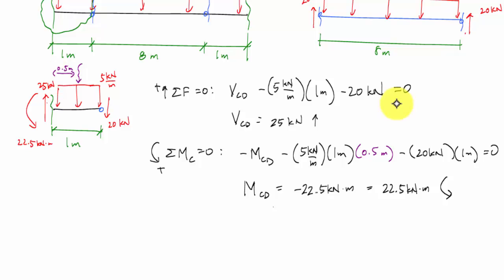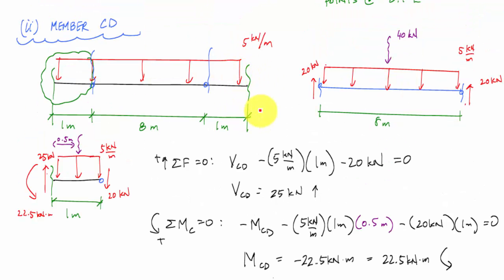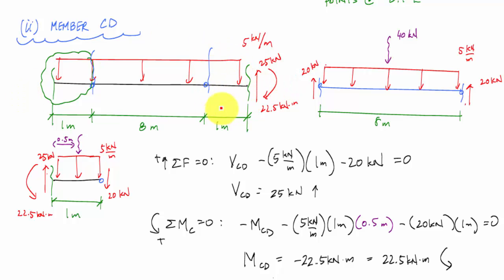By symmetry, the other end of member CD also has an end moment of 22.5 kilonewton-meters and an end shear of 25 kilonewtons pointing upward. We have now found the end moments and end shears for member CD.